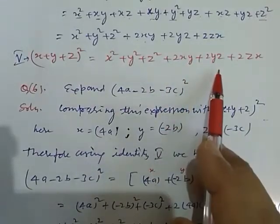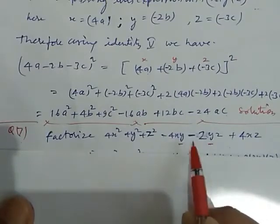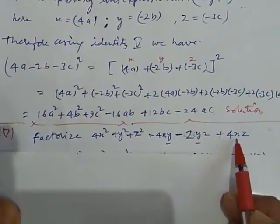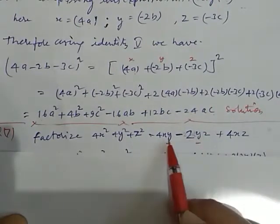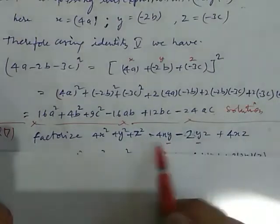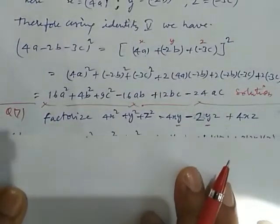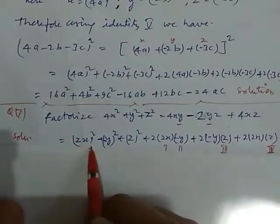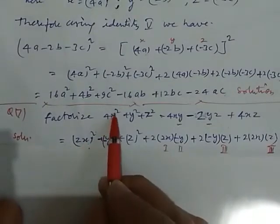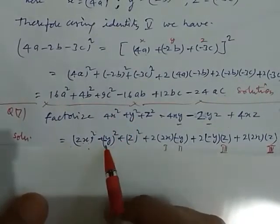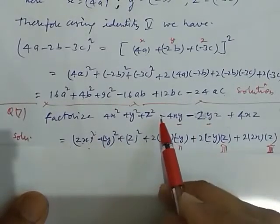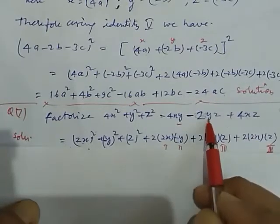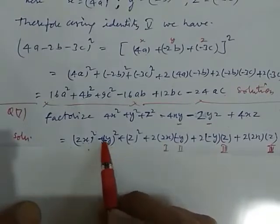And our identity — we get all the signs positive. So, first we decide how the negative signs come. We check: only the y term — any term containing y is negative. But the term containing x and z is positive. It means y is negative — due to the negative sign of y. So, by keeping this thing in mind, we solve this. This 4x squared can be written as 2x whole square. y squared can be written as minus y whole square — why we put minus here? Because we check that in both these terms there is a negative sign, but this term having positive sign. It means x and z are positive but y is negative. So, we place here negative sign — the whole square of minus y. Here, z whole square.